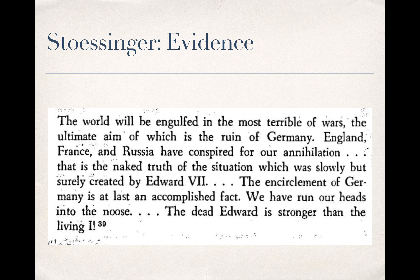The difference between Kaiser Wilhelm's tone in the Willy-Nicky telegrams — which is conciliatory, searching for a solution outside of Germany and Russia going to war — and his private convictions that all of Europe is conspiring to overrun Germany demonstrates, in Stossinger's view, how Kaiser Wilhelm's paranoia affected his decision-making. The fact that Kaiser Wilhelm is willing to say that the world is going to be engulfed in war and all of Europe is conspiring against Germany suggests he's not acting rationally — instead allowing his emotions and loyalty to the central alliance to govern what should be a rational policy-making process.